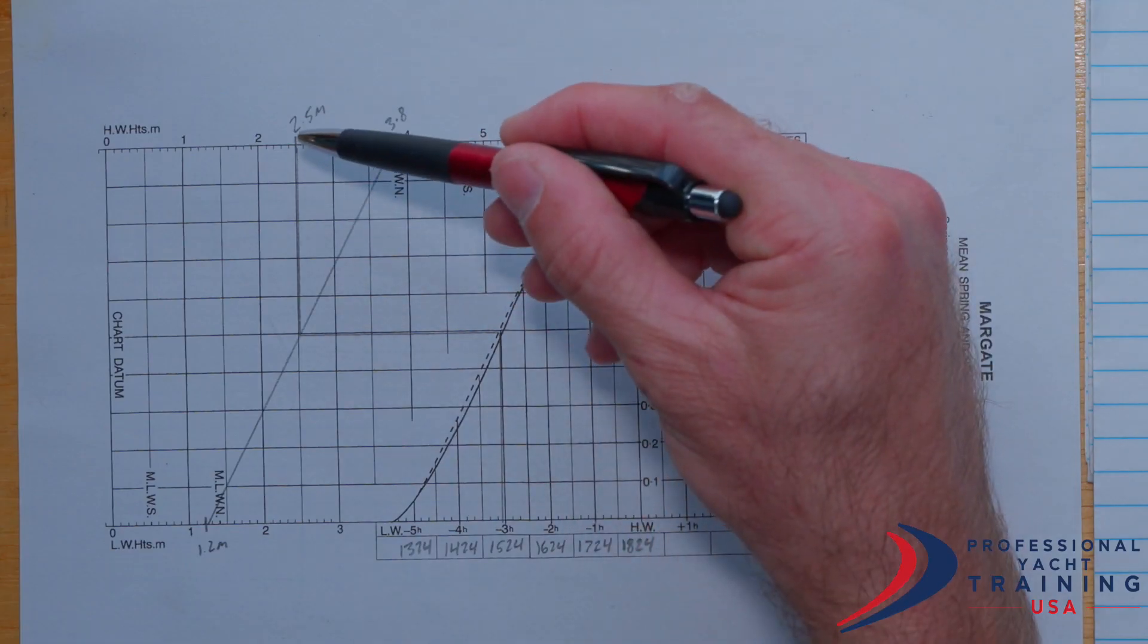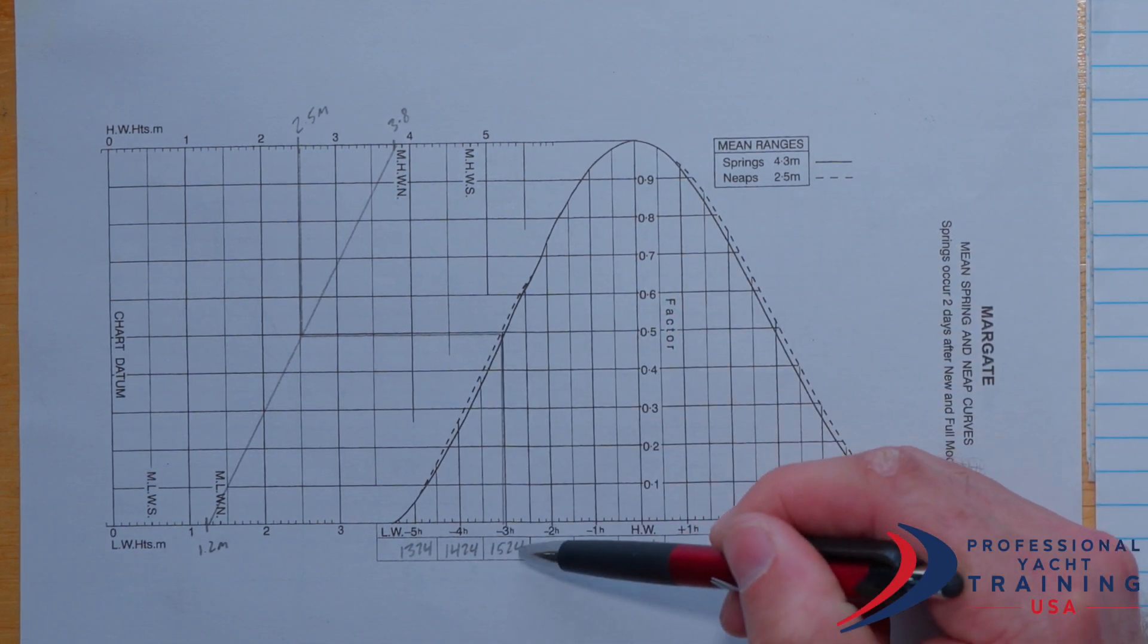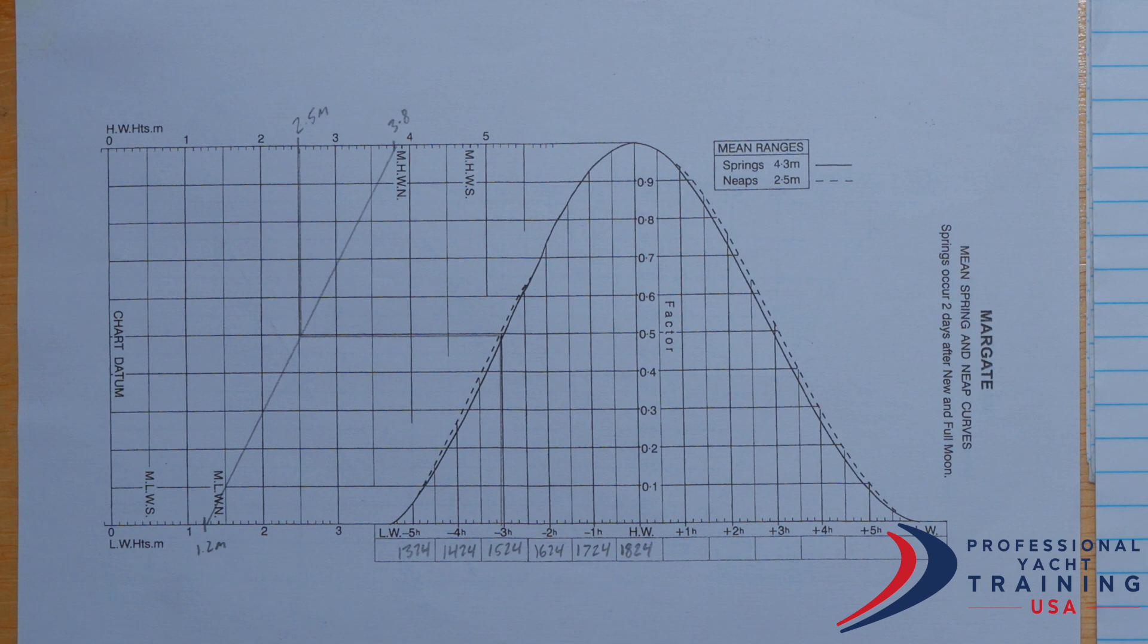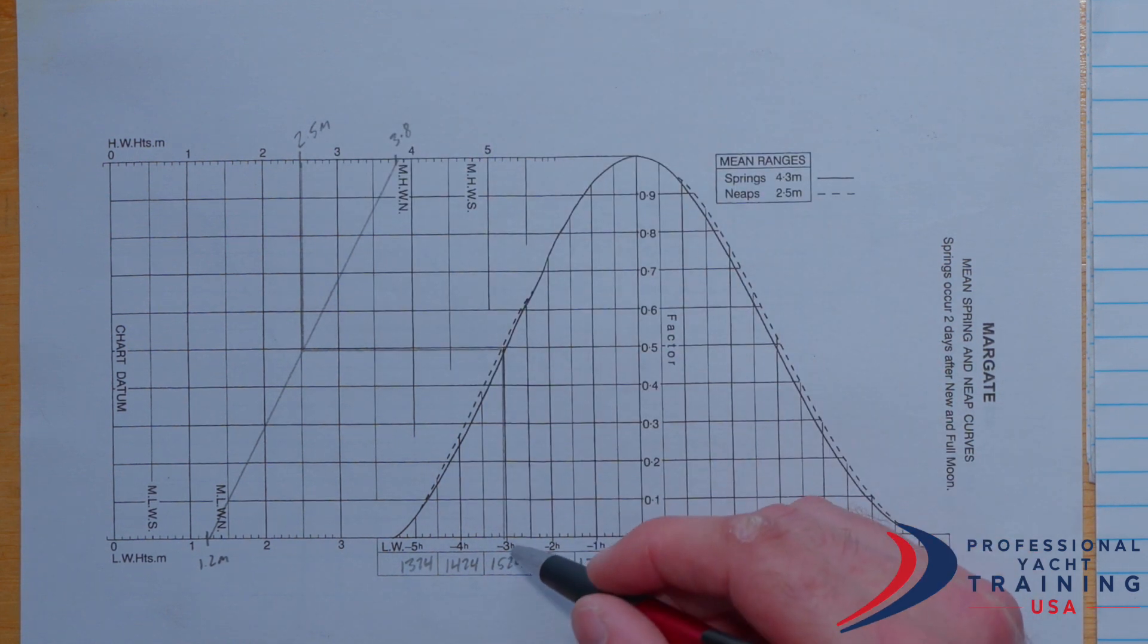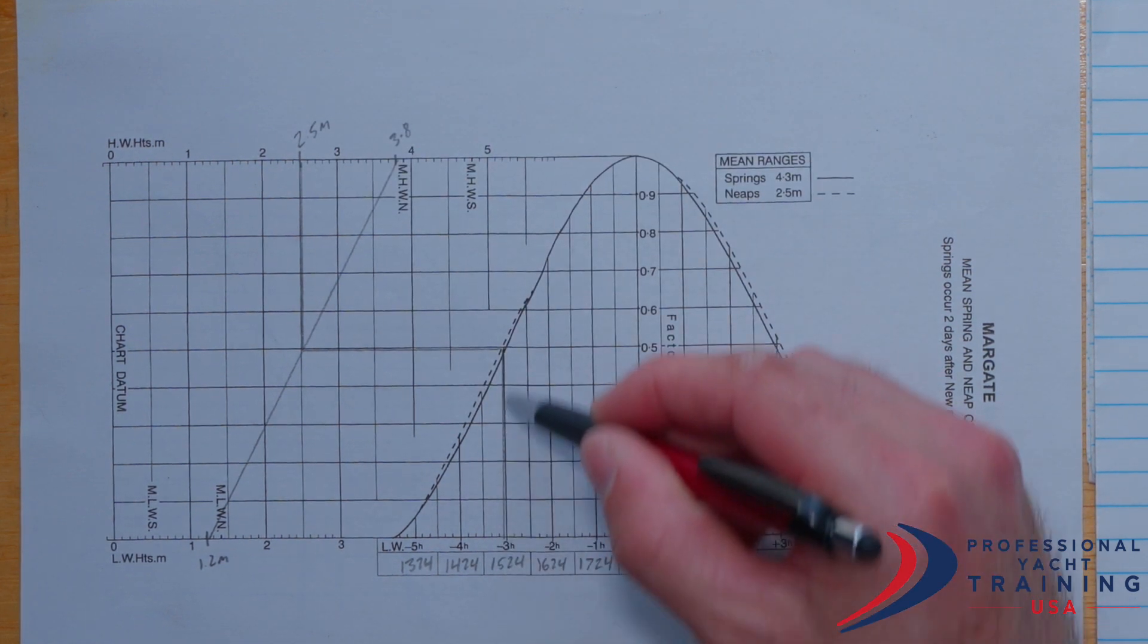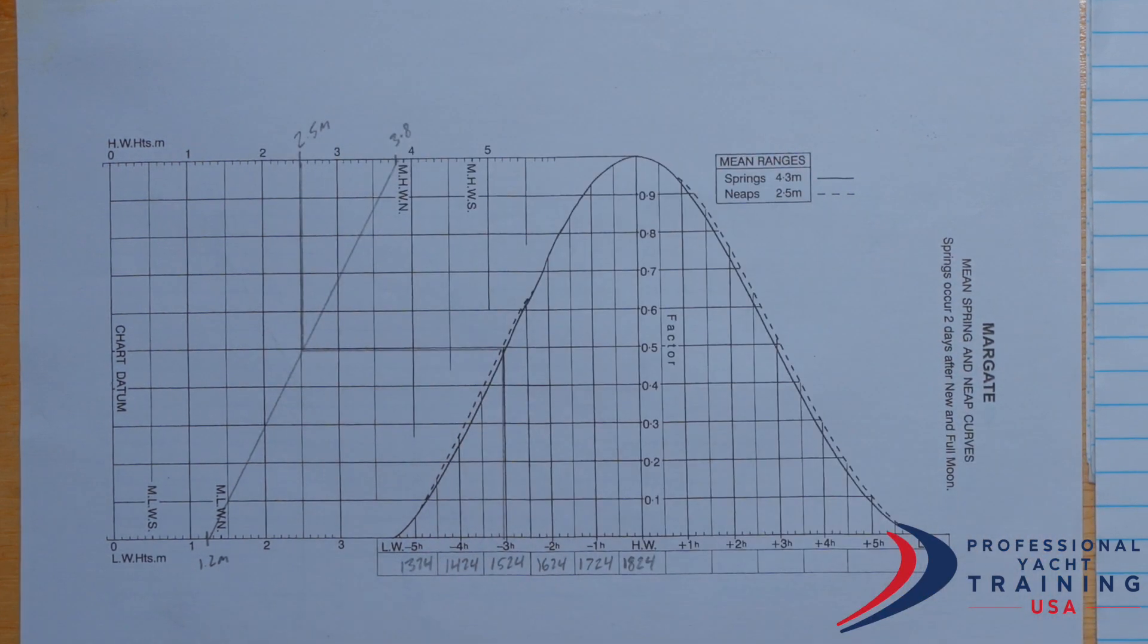So in both cases, we worked from 2.5 meters down, across, and down until we found the corresponding time. However, a subsequent problem could ask you for a height, like what is the tidal height at 15:20 on the afternoon rising tide. In that case, the supporting work is all the same. It's all the same tidal data, the same tidal curve, and the same springs and neaps calculation. But rather than starting here, if we wanted to know what the tide height was at 15:20, we would start here, work up, across, and up, and then this would be our answer in that case.